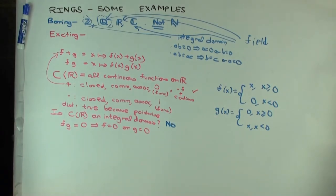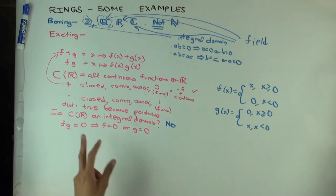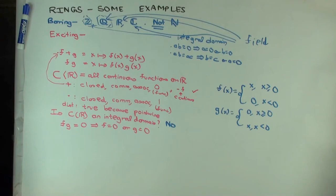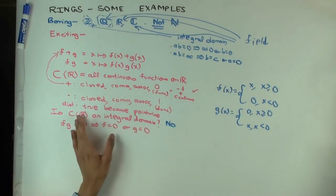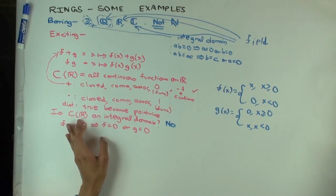So C(R) is not an integral domain. Is it a field? Well, if it is not an integral domain, it's not a field. Can it be put inside a field? No. There cannot be a field which contains this, because if a field contained C(R), then that field would be an integral domain, and any subring of an integral domain is still an integral domain. So this cannot be put inside any field.